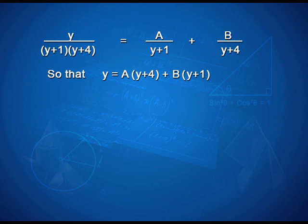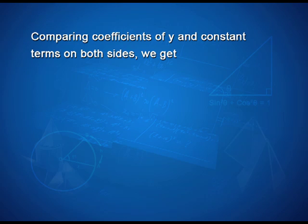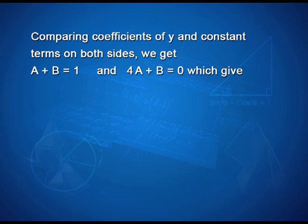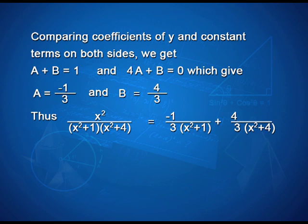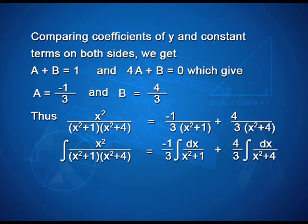So that y = A(y+4) + B(y+1). Comparing coefficients of y and constant terms on both sides, we get A + B = 1 and 4A + B = 0, which gives A = -1/3 and B = 4/3. Thus x²/((x²+1)(x²+4)) = -1/3 · 1/(x²+1) + 4/3 · 1/(x²+4). Therefore, the integral equals -1/3 · integral dx/(x²+1) + 4/3 · integral dx/(x²+4).